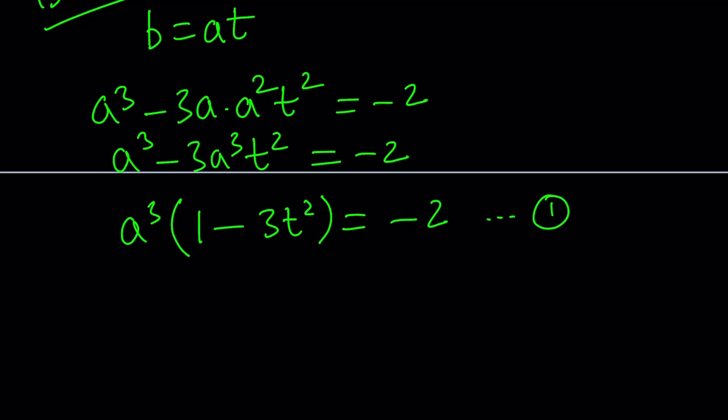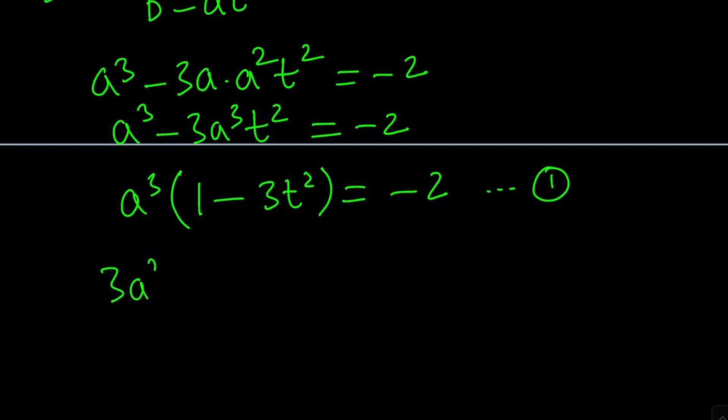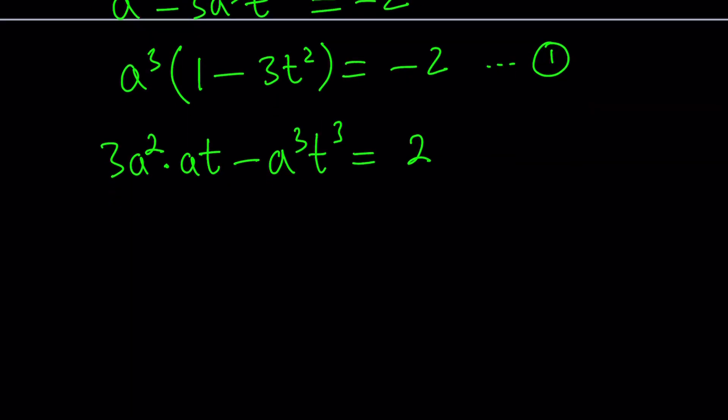We get a³ - 3a·(at)² = -2. Simplifying, a³ - 3a³t² = -2. Factor out a³: a³(1 - 3t²) = -2. That's our first equation. Now let's work on the second equation.